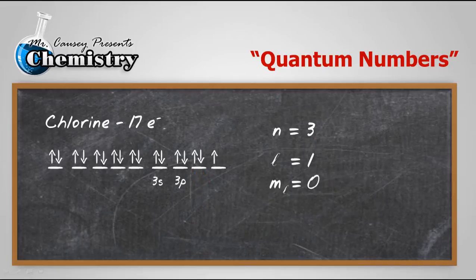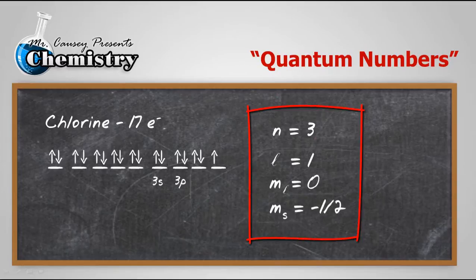And then, of course, we have M sub S, which is the spin. And the first one in, plus 1 half. Second one in, minus 1 half. And there you have it. There are the quantum numbers for the last electron of chlorine.